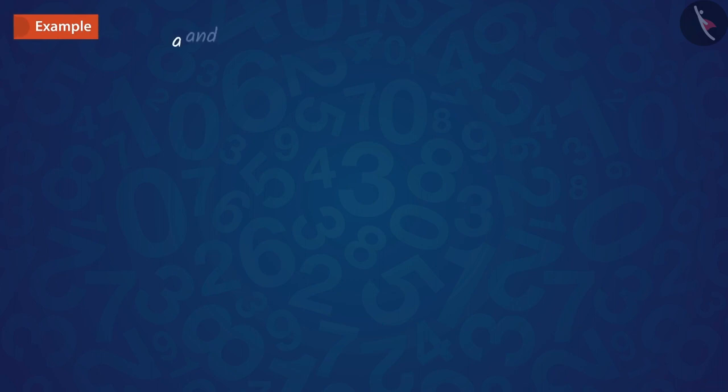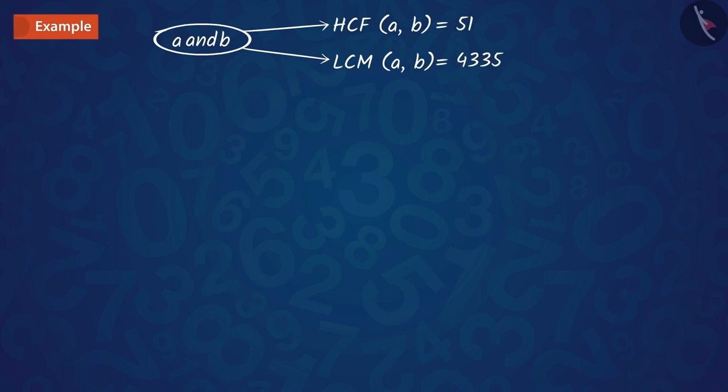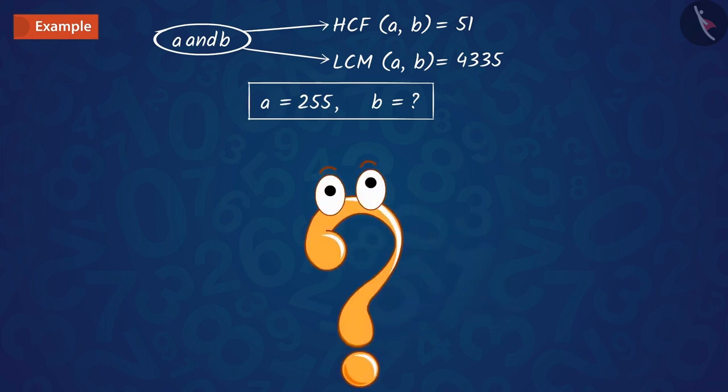The HCF and LCM of two numbers A and B are 51 and 4335 respectively. If A is equal to 255, find the value of B. Can you guess how the value of B can be found?